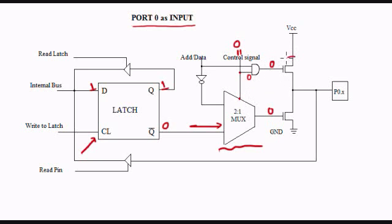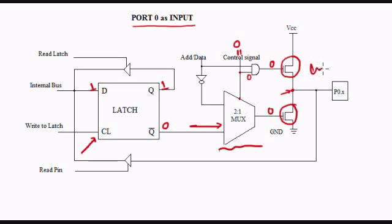These are the FETs, and they act as switches. A low signal to an FET means it acts as an open circuit — it doesn't allow anything to pass through. If I measure the voltage at this point, it is going to be high impedance state, because this point is neither connected to 1 nor connected to 0. It is at the third state, which is nothing but high impedance state.